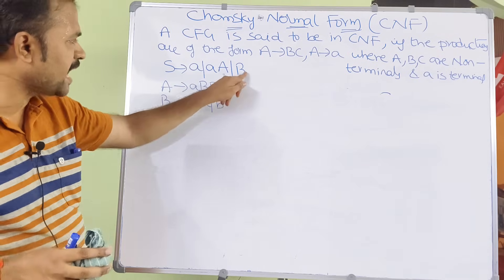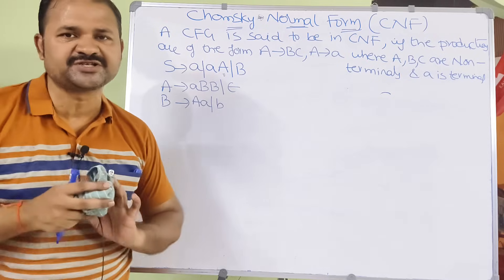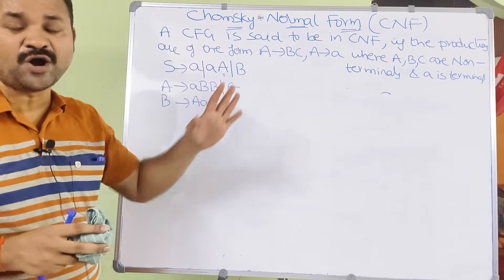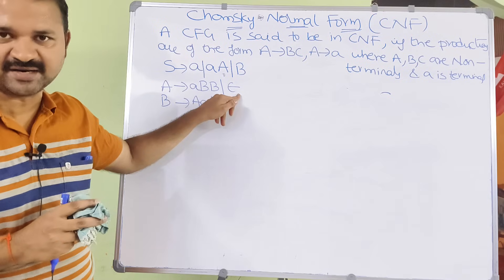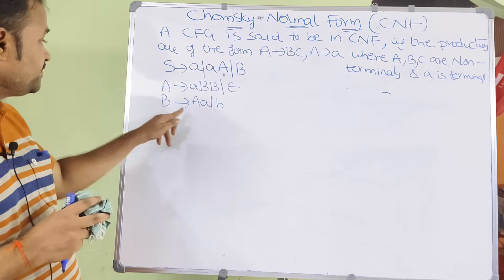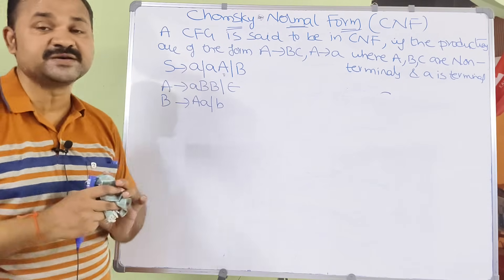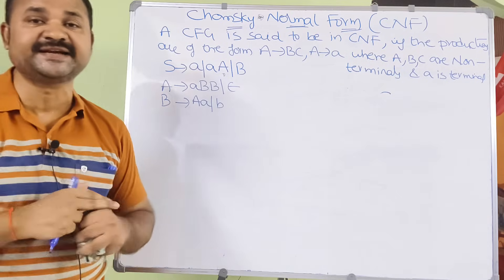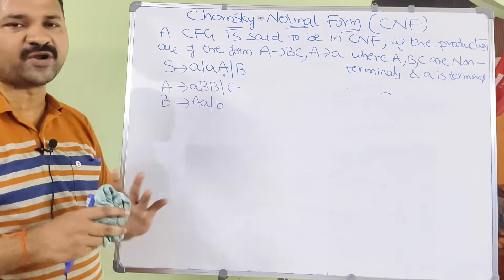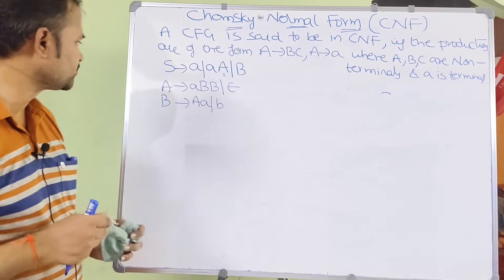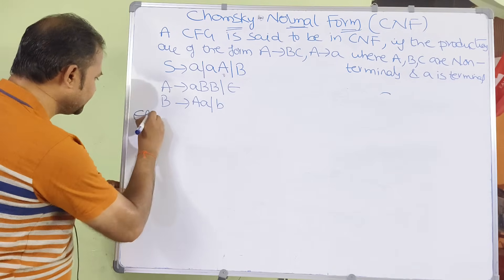Let's check whether the grammar contains useless symbols. Here, S produces AB, and productions for both A and B are defined. Every non-terminal must eventually produce terminal symbols: A produces terminal epsilon, B produces terminal b, and S produces terminal a. Since every non-terminal produces a terminal and A, B are reachable from S, all symbols are useful.